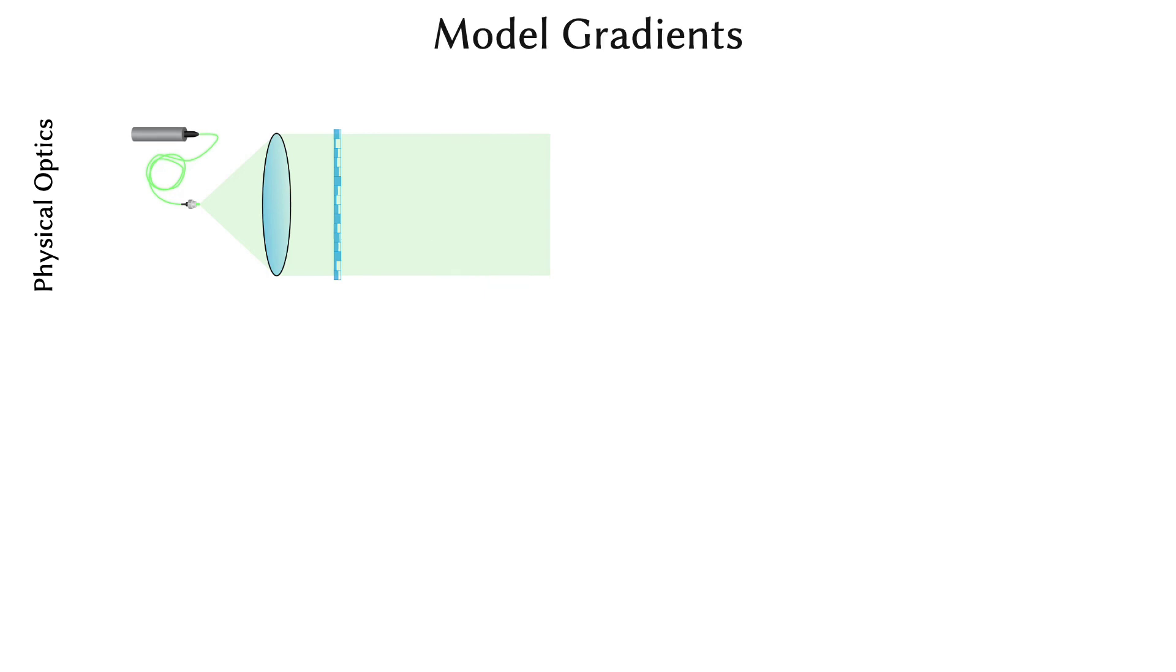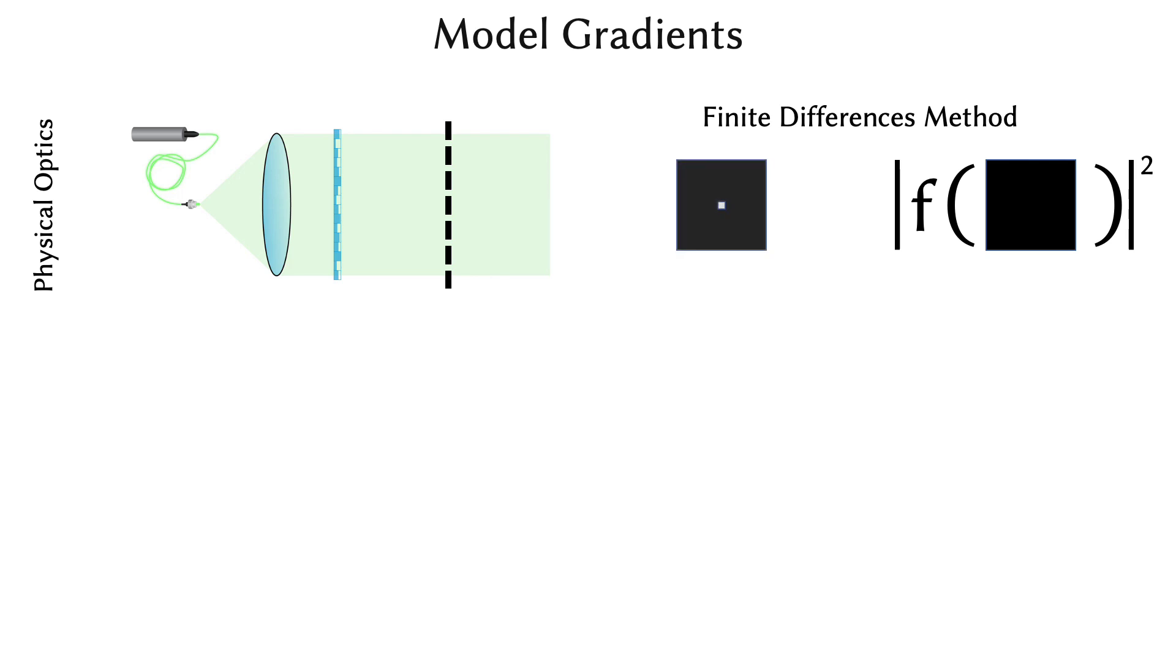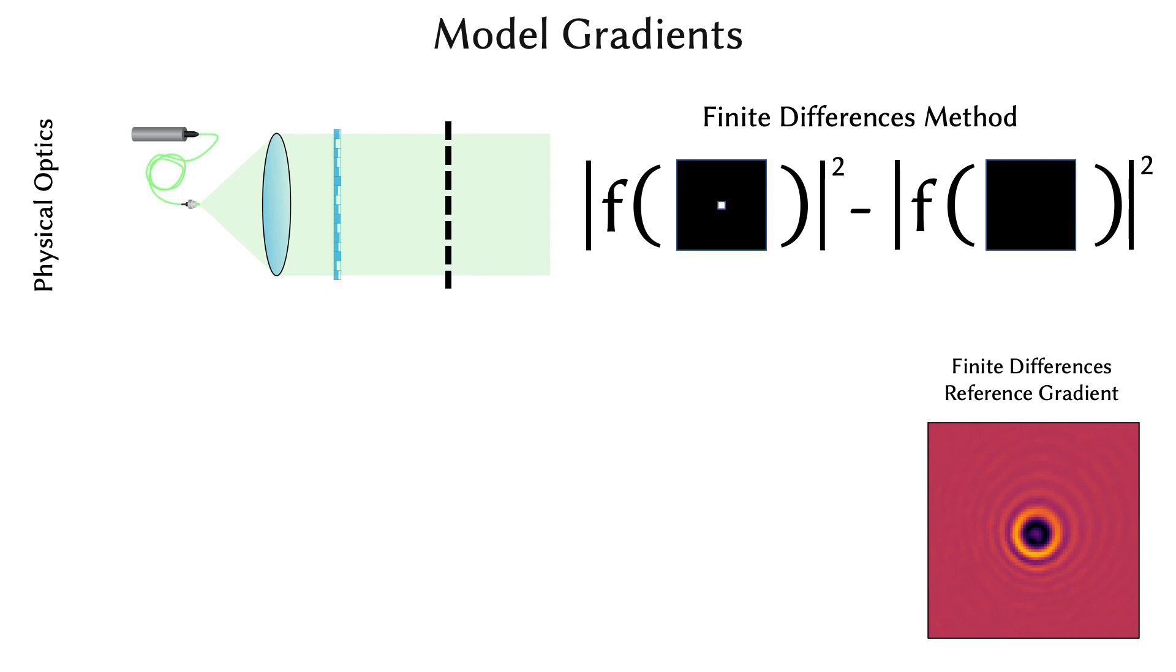A good wave propagation model should not only be able to predict the forward image formation well, but also approximate the gradients of the physical optics. We can optically record a small subset of the gradients with the physical setup using the finite differences method. For this purpose, we show a phase pattern with all zeros on the SLM and capture the corresponding intensity on the target plane. This is subtracted from another camera image recorded with only a small portion of the SLM phase set to pi.